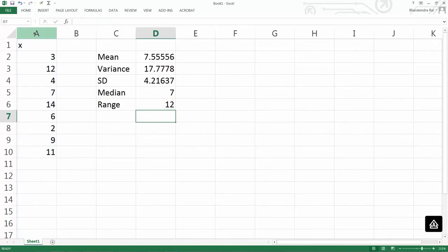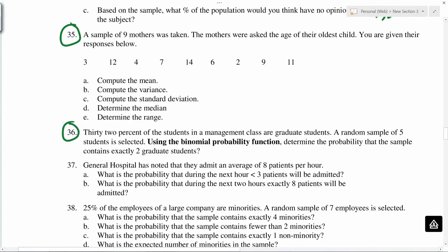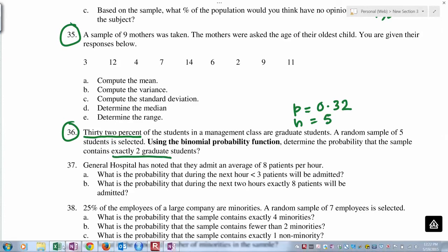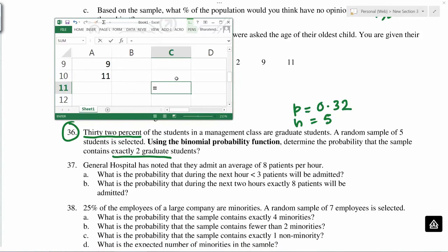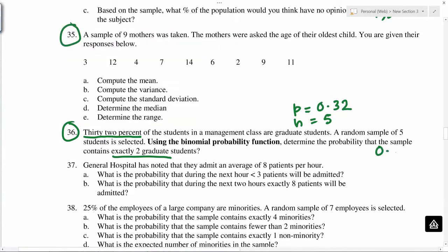32 percent, p equals 0.32. A random sample of five students, so n is 5. Exactly 2, so let's use binomial distribution. Equals, exactly 2 means 2, sample size 5, 0.32, and false because we are calculating exactly at 2. So the answer is 0.32.